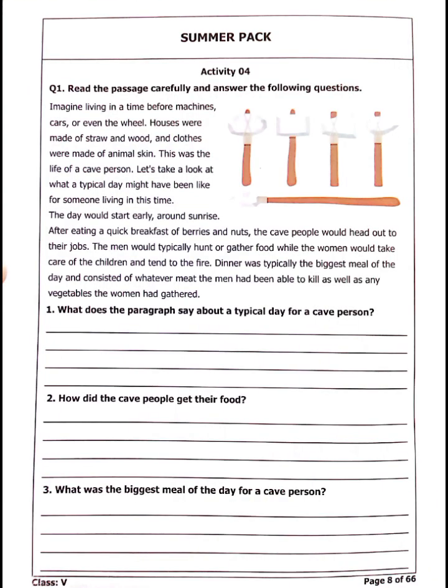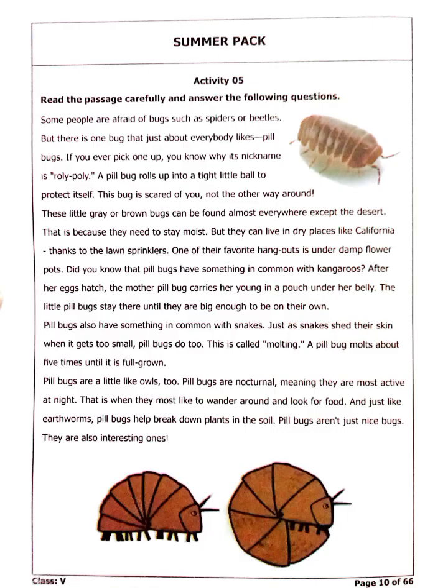In Activity 4, there is again a comprehension. Read that passage carefully and answer the following questions. You have to read this paragraph first and give the answers of the questions below. Some of the questions are given on the next page and you have to answer them all.